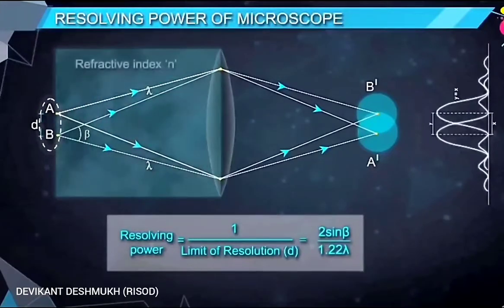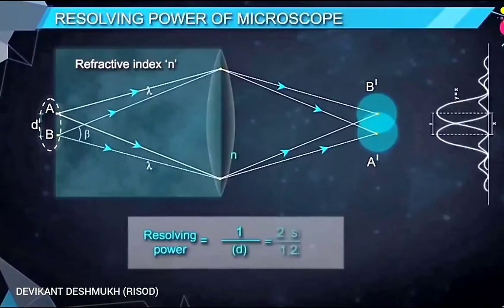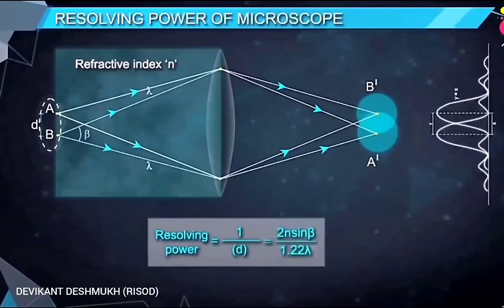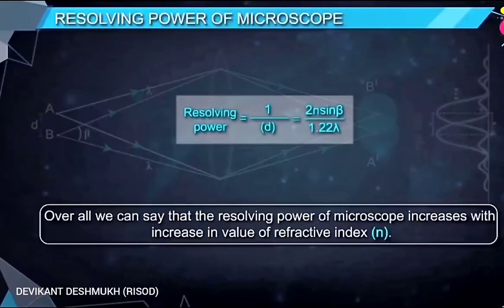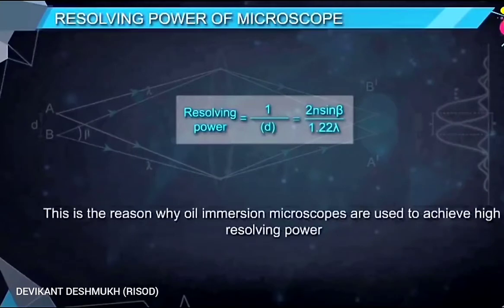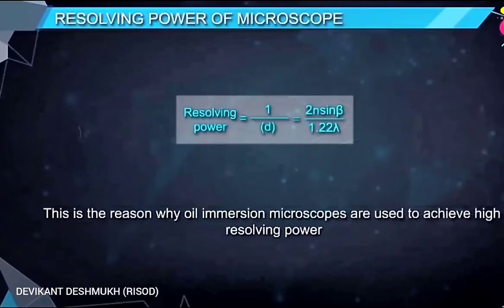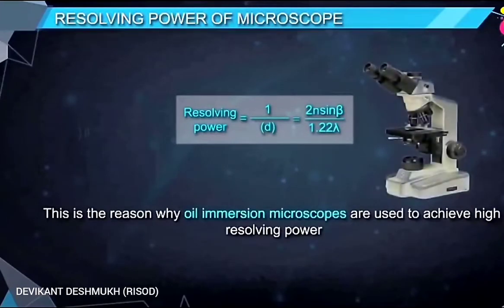If the medium between object and objective is any material of refractive index n then resolving power of microscope will be two n sine beta upon one point two two lambda. Overall, we can say that the resolving power of microscope increases with increase in value of refractive index n. This is the reason why oil immersion microscopes are used to achieve high resolving power.